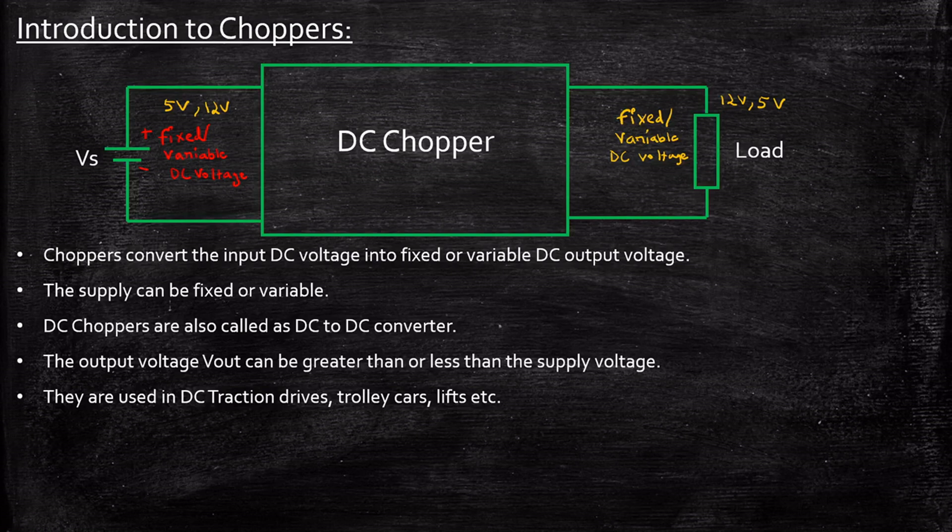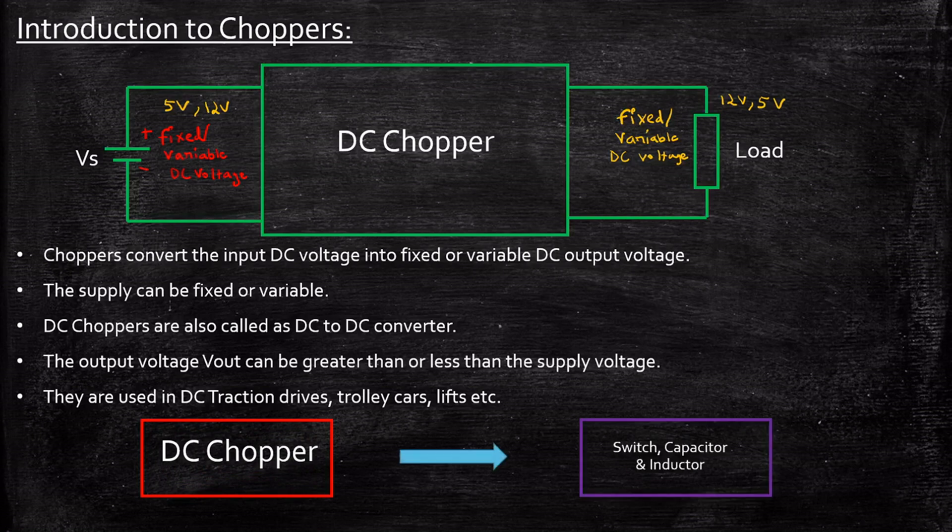Now you might be having a question as what does this DC to DC converter or DC chopper contain? So it primarily contains three important components that is switch, capacitor and inductor. We will be playing around with the position of these components in order to achieve fixed or variable DC output voltage, either step up or step down or depending upon whatever we want.